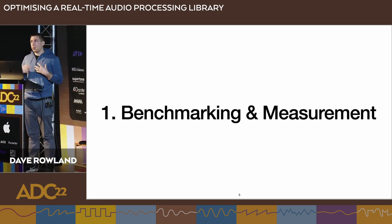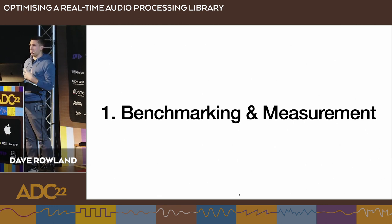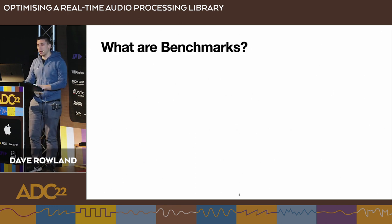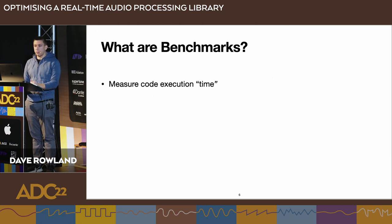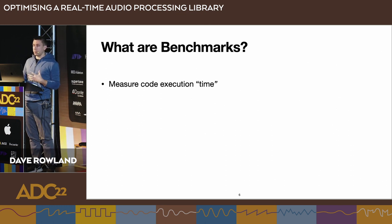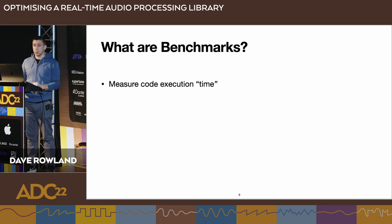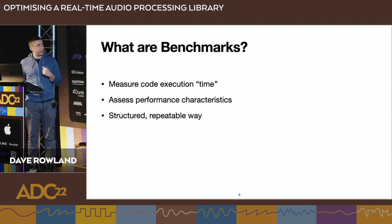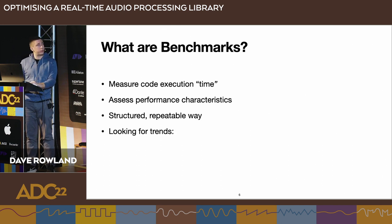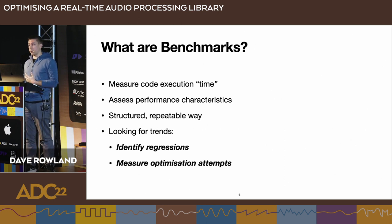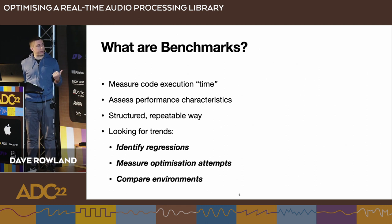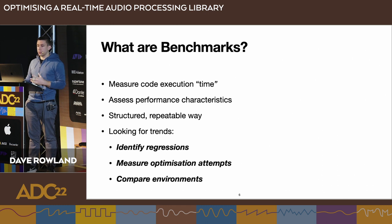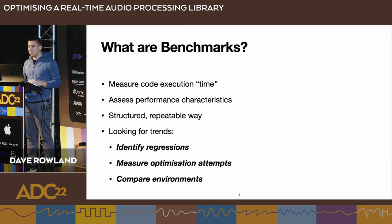As we go through benchmarking, we'll build up the terms we need, keeping in mind that we're building a system we can reference over time. Benchmarks effectively measure code execution time—how long a piece of code takes to run. In micro benchmarks, we're typically measuring the same piece of code over and over to get more detail. They're used to assess performance characteristics in a structured, repeatable way, which lets us look for trends. Trends help us identify regressions, measure optimization attempts, and compare environments across platforms.